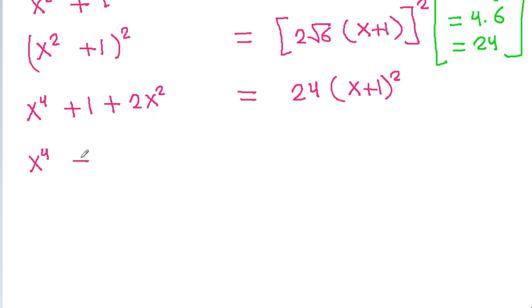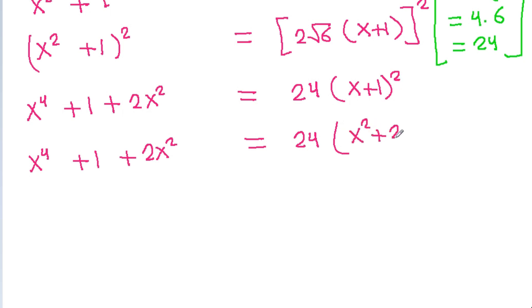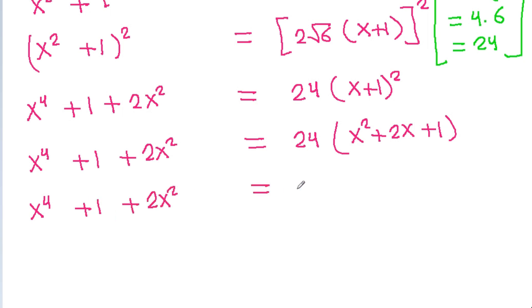Expanding the left side: x⁴ + 1 + 2x². The right side gives 24(x + 1)² = 24(x² + 2x + 1) = 24x² + 48x + 24.